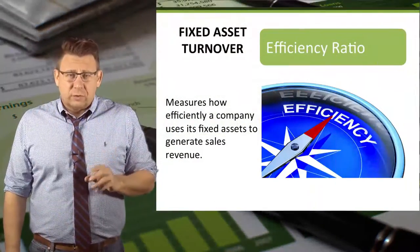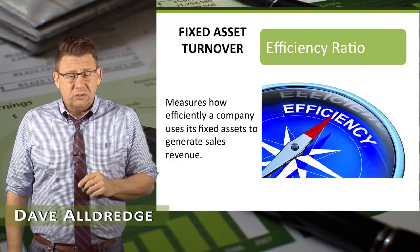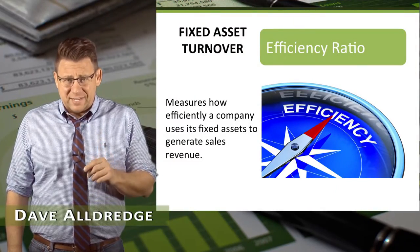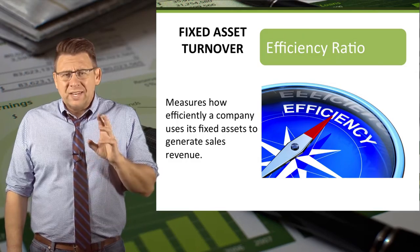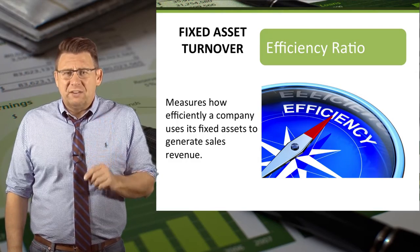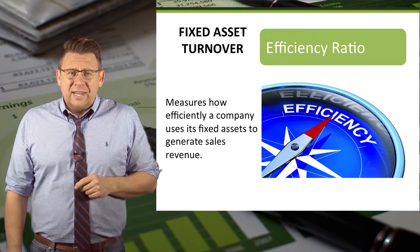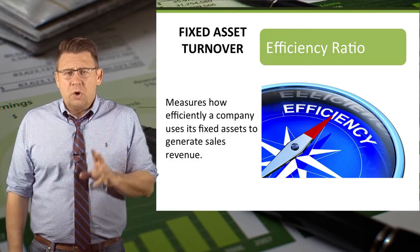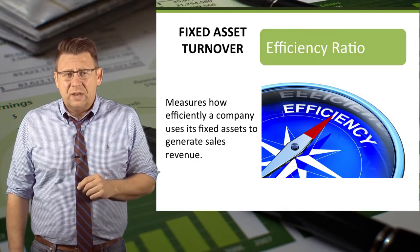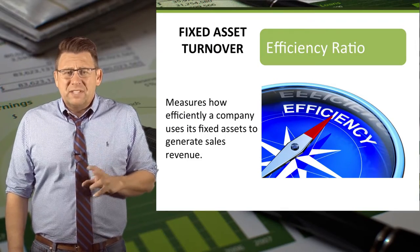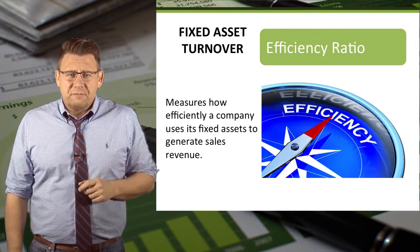The fixed asset turnover ratio measures how efficiently a company uses its fixed assets to generate sales revenue. It is a variant of the total asset turnover and tends to be more important in industries that are heavily automated. Fixed asset turnover is a measure of efficiency.